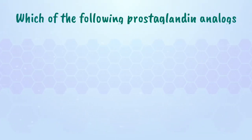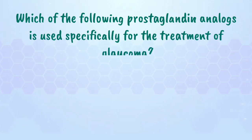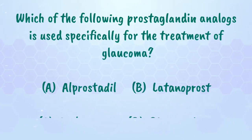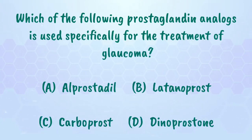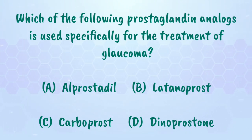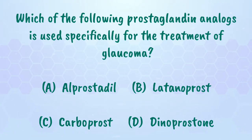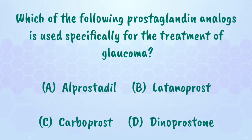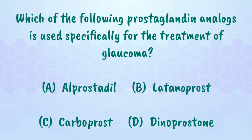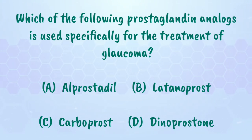Let's start with a question: which of the following prostaglandin analogs is used specifically for the treatment of glaucoma? Option A: Alprostadil. Option B: Latanoprost. Option C: Carboprost. Option D: Dinoprostone. Pause the video and try to find your answer.